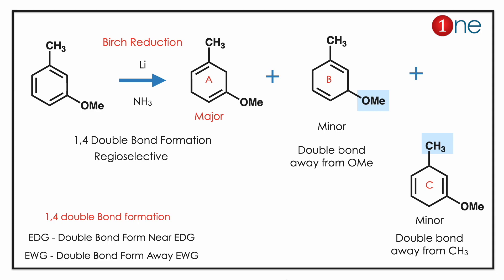This is a regioselective reaction. Electron-donating groups push the double bond toward them — the double bond always forms near the electron-donating group. On the contrary, with electron-withdrawing groups, reduction happens so that the double bond forms away from the withdrawing group. Here, both the methyl and methoxy groups are electron-donating.